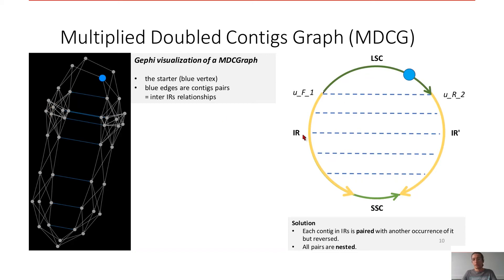You can see in the reality, in the solutions, the wanted solutions, that if you take a contig in the repeat region, in front of it, because it's inverted repeats, it's very important, you can see there is its contig but in reverse orientation, forward orientation and reverse orientation.